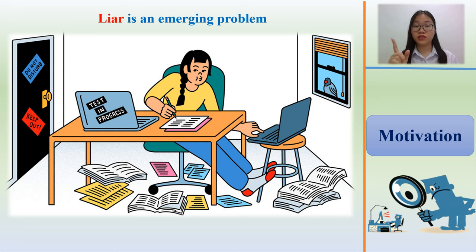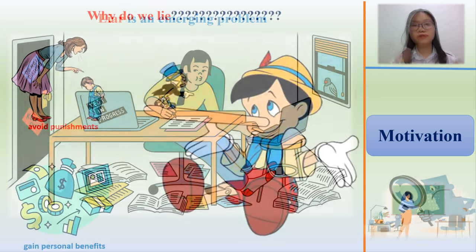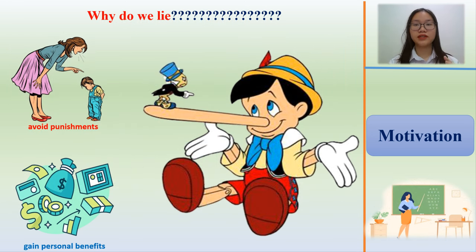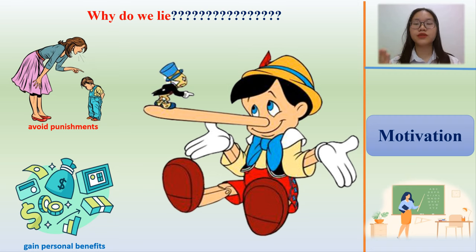One of the emerging problems is lying. Lying has come to be recognized as an instinctive human trait because of its usefulness for highly intelligent, highly social species such as humans.